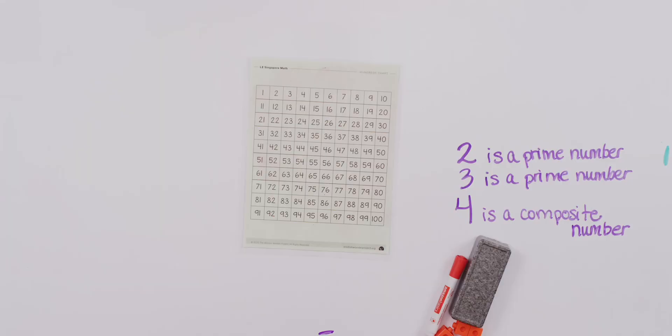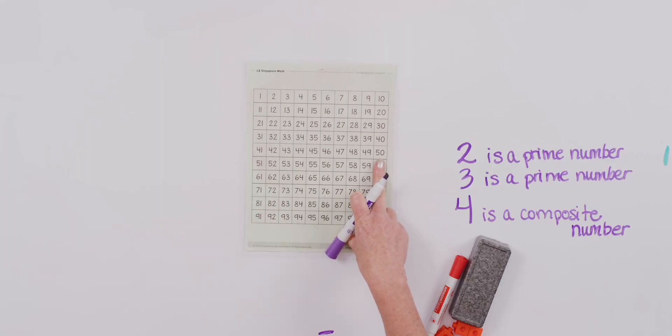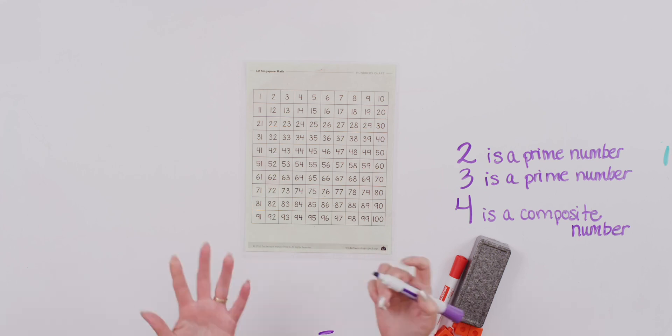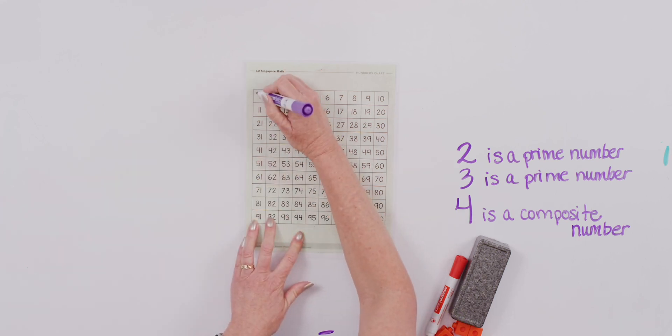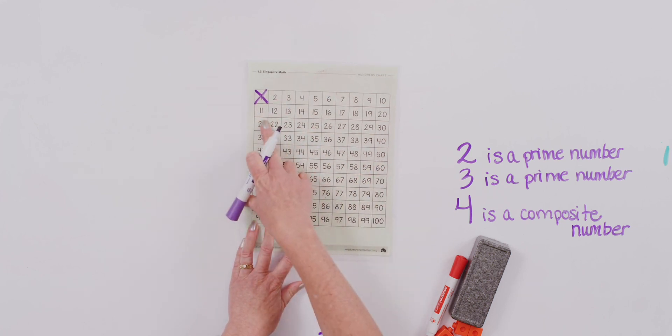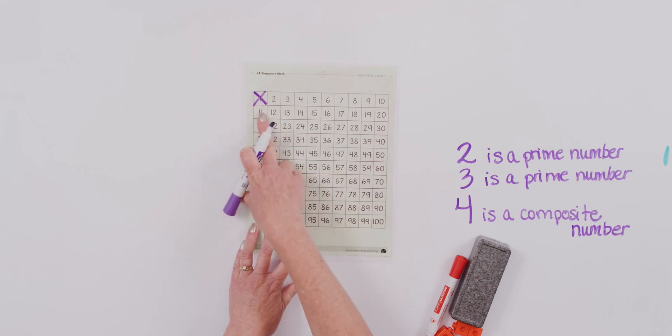A composite number is going to be a number that's going to have more than just two factors. But we're going to play with our prime numbers on our 100 number chart right here. So make sure you have that handy. Get it out. And we're going to find all of our prime numbers just up to 50 today. 1 is actually neither a prime number nor a composite number. 1 is kind of special. 1 is 1. But we're going to cross it off because it's not a prime number. Our goal is to cross off all the numbers that are not prime up to 50 today. 1 is not prime.